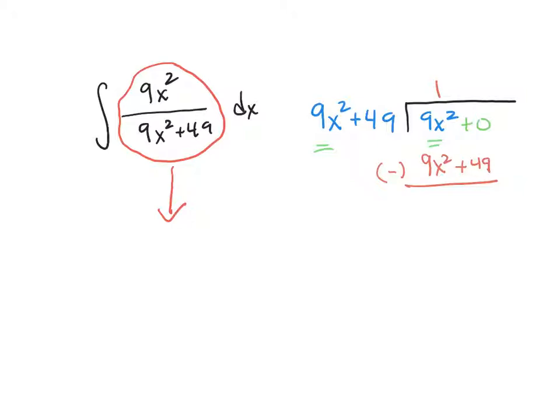9x squared minus 9x squared is 0. I'm not going to write the 0, but it would be right here. And then 0 minus 49 is negative 49. This is our remainder. And the way we write the remainder when we do the division, since it's negative 49, I'm going to write minus, and then I'm going to put 49 over the denominator of 9x squared plus 49. So this 9x squared over 9x squared plus 49 turns into 1 minus 49 over 9x squared plus 49.